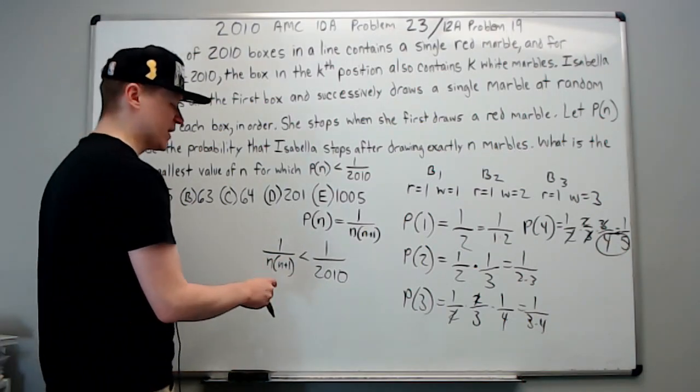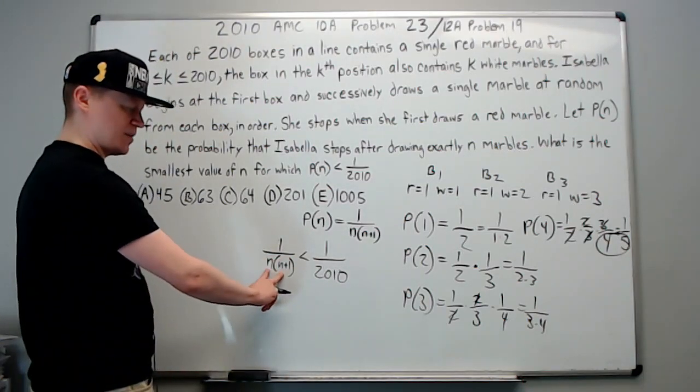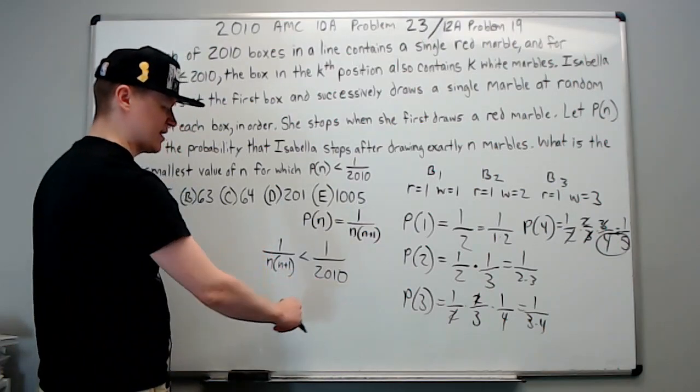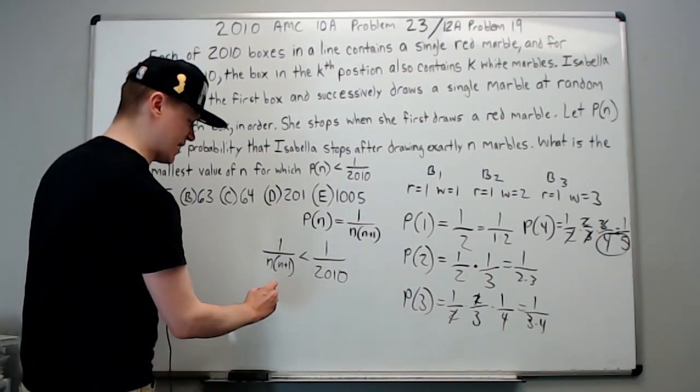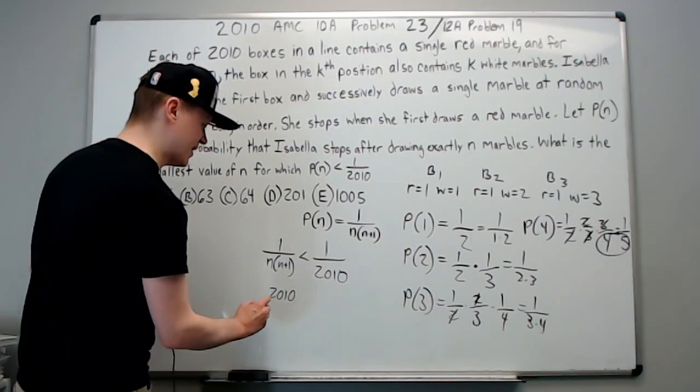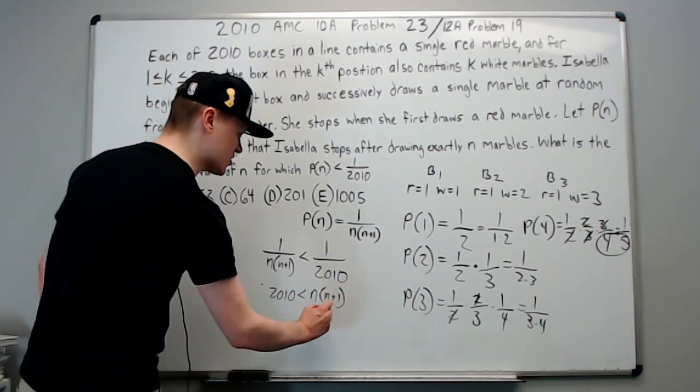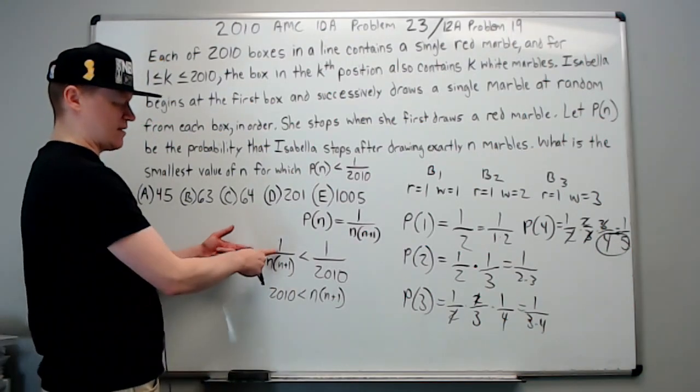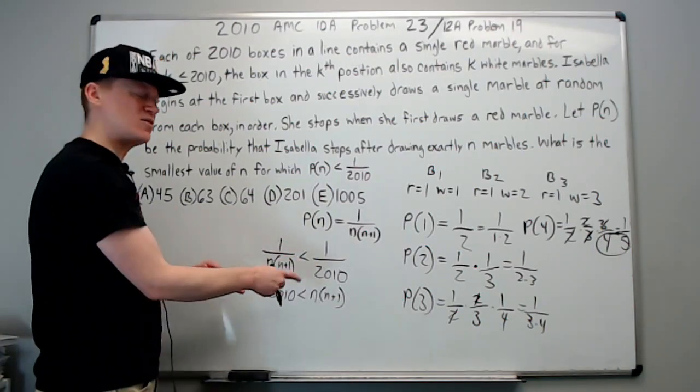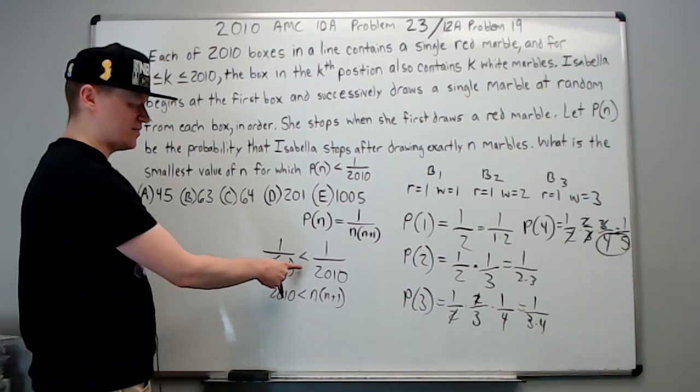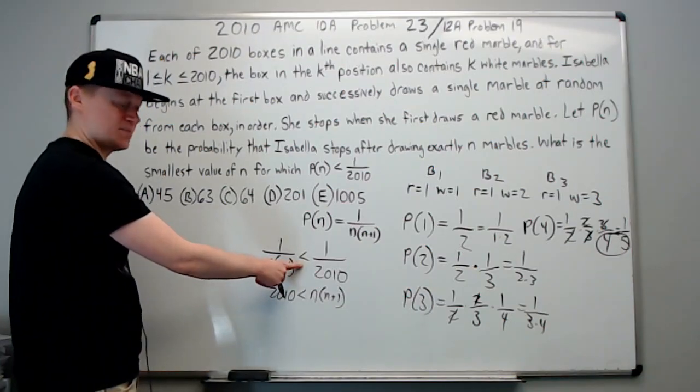I can multiply both sides by this and both sides by this, and you would get that 2010 is less than n times n plus one. And you also might just say that you could reciprocal them, and when you take the reciprocal of two positive numbers the inequality flips. If you're not sure of that, do some examples to convince yourself that it's true.